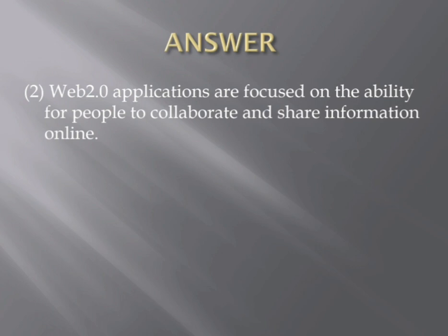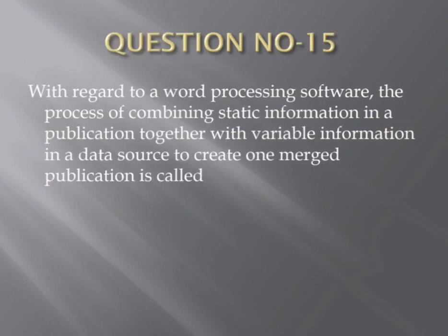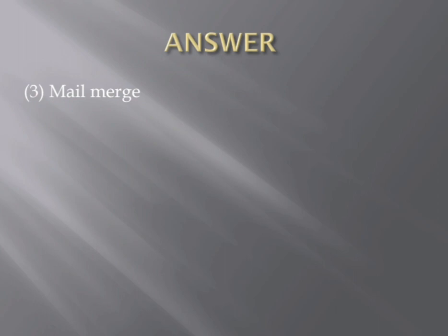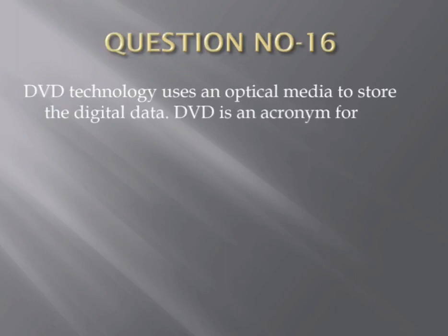Question number fifteen. With regard to word processing software, the process of combining static information in a publication together with variable information in a data source to create one merged publication is called — Options: (1) Electronic Mail, (2) Data Sourcing, (3) Mail Merge, (4) Spam Mail. The correct answer is Mail Merge.